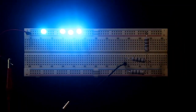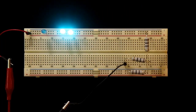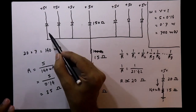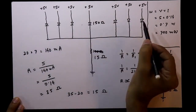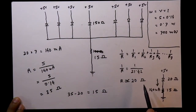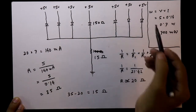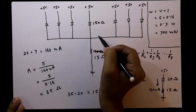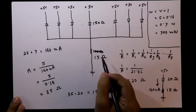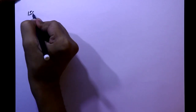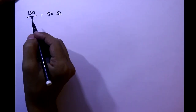Now I'll remove the LEDs one by one and observe. Some LEDs blow up. This is because when 7 LEDs were connected, the equivalent internal resistance was 20 ohms. As I removed LEDs one by one, the equivalent internal resistance kept increasing. When only 3 LEDs remained, the equivalent internal resistance was 150/3 = 50 ohms.